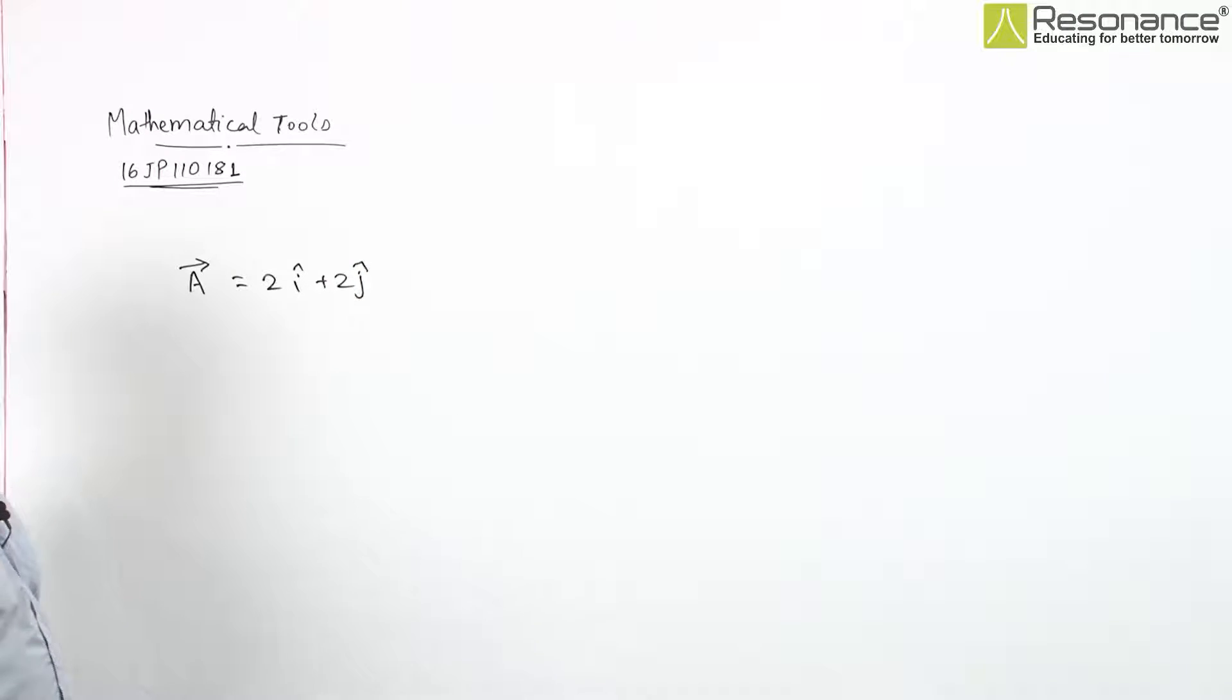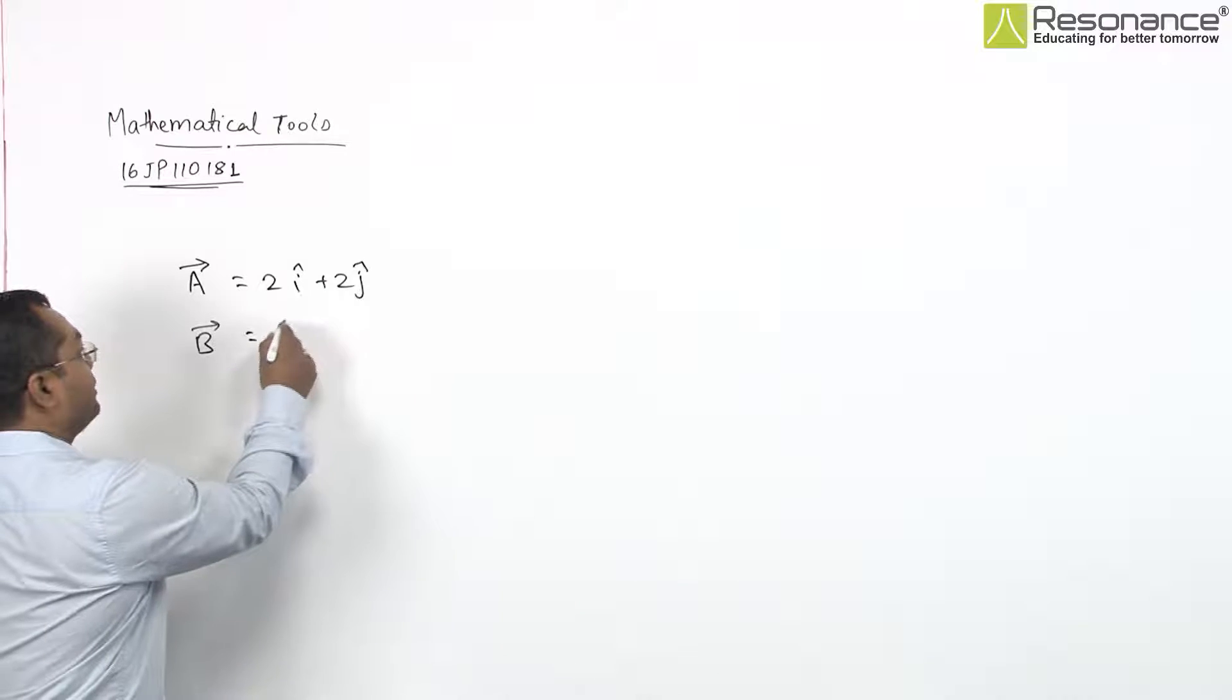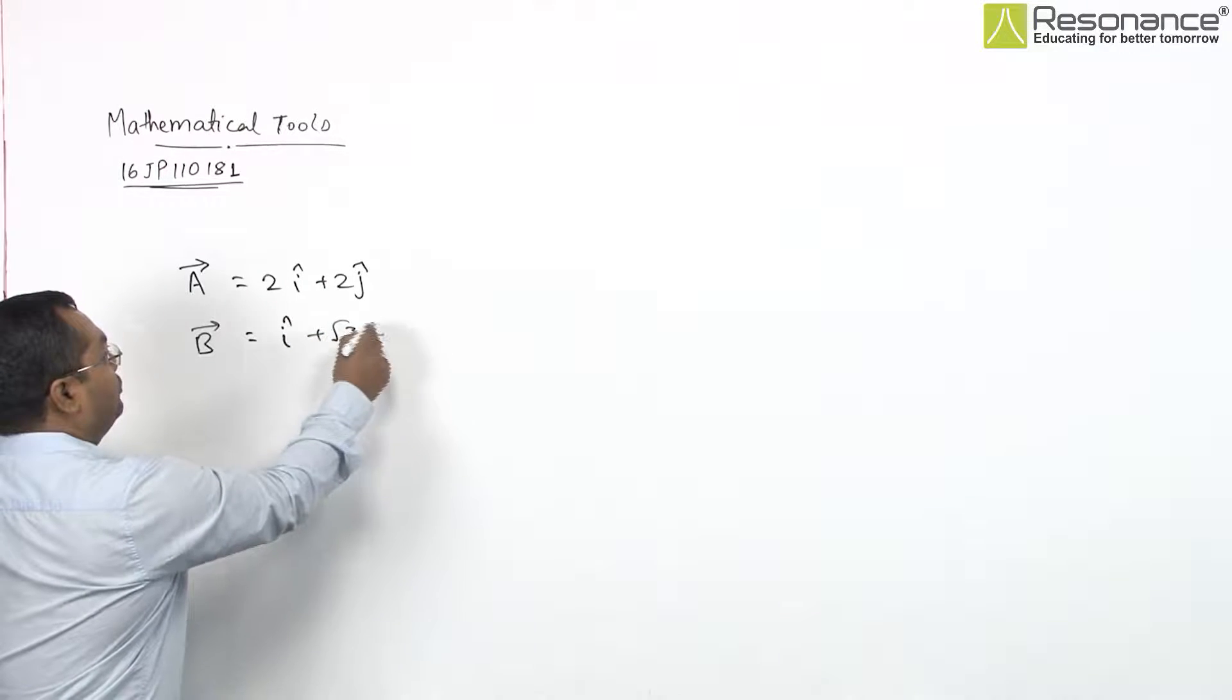And another vector which is given as, say vector B, whose components are 1 comma root 3. So it will be written as i plus root 3 j.